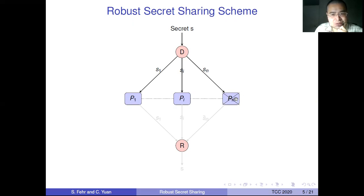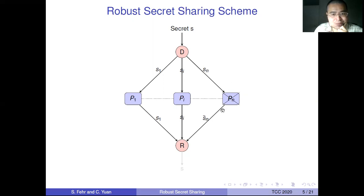Now, PN is corrupted. What will happen during the reconstruction phase? In the reconstruction, the reconstructor R asks each party to send their share. And PN, because he is corrupted, will send a modified share. The reconstructor R can still recover the secret S in the presence of some corrupted shares, if there are not too many corrupted shares.